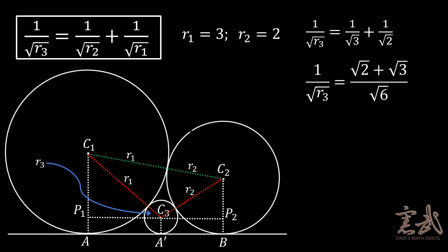we get 1 over R3 is equal to the square root of 2 plus the square root of 3 all over the square root of 6. When we square both sides, we get 1 over R3 is equal to 2 plus 2 times the square root of 6 plus 3 all over 6.